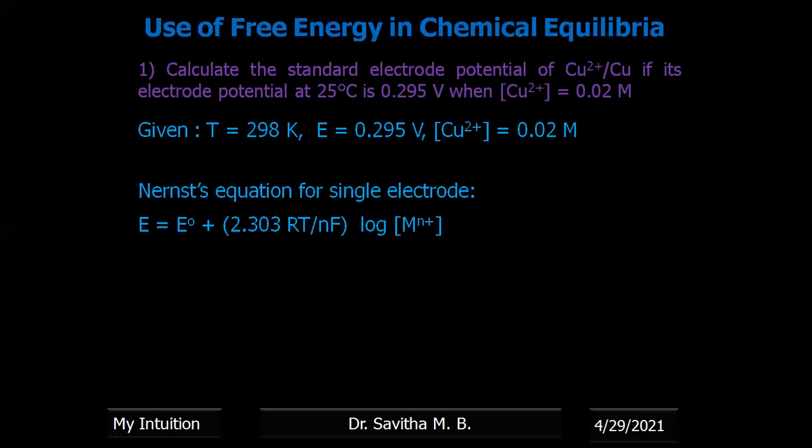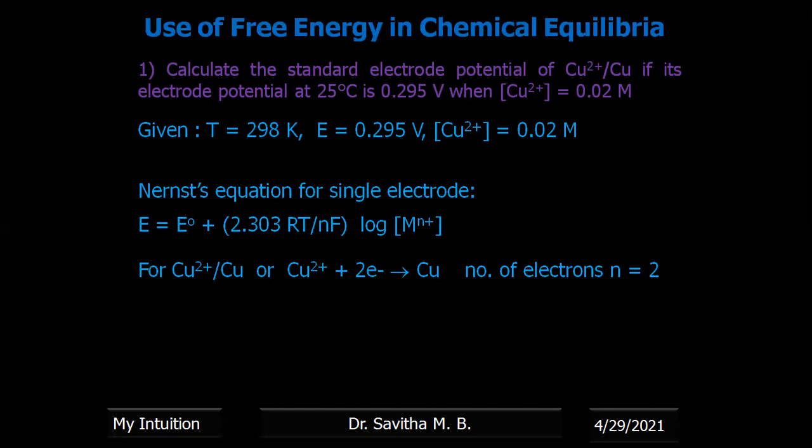The equation we use is: E = E°(Cu) + (2.303 RT / nF) × log[metal ion concentration], and the metal ion here is Cu²⁺. Looking at the reaction: Cu²⁺ + 2e⁻ → Cu, the number of electrons is 2. Also, Cu²⁺ means two electrons are removed, so n = 2.